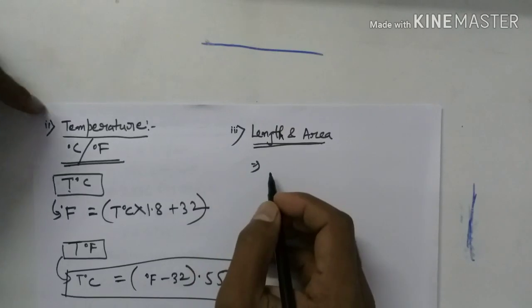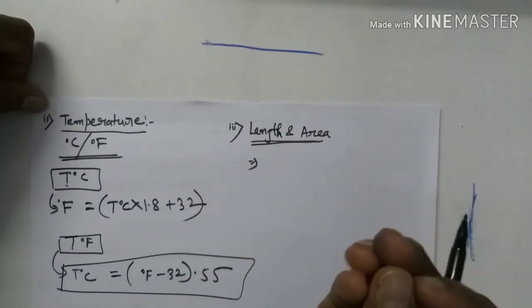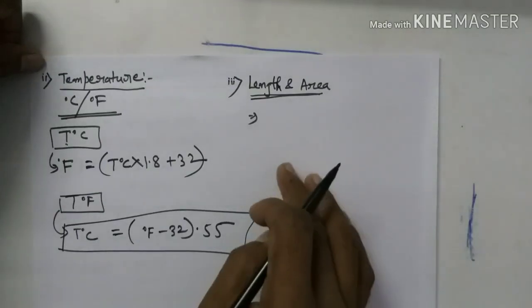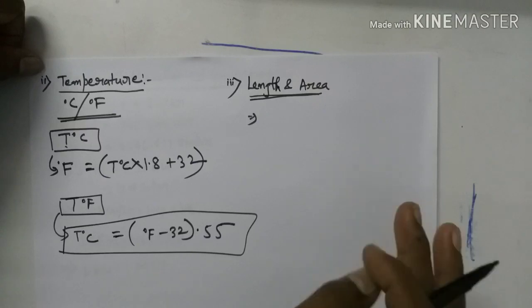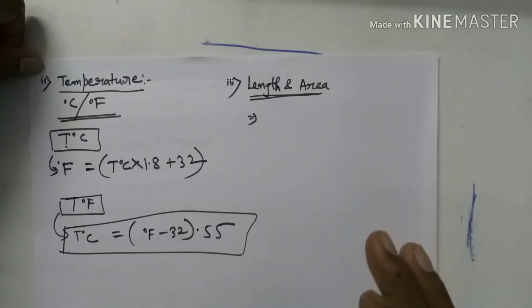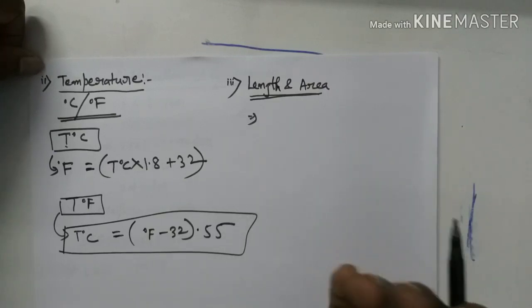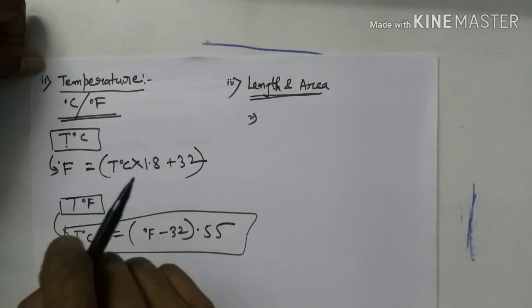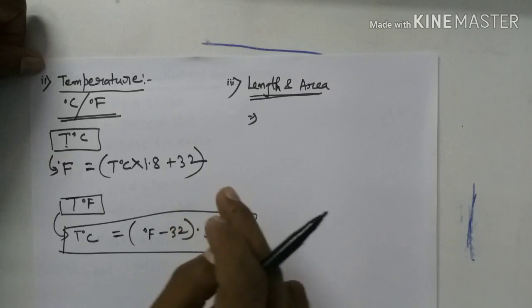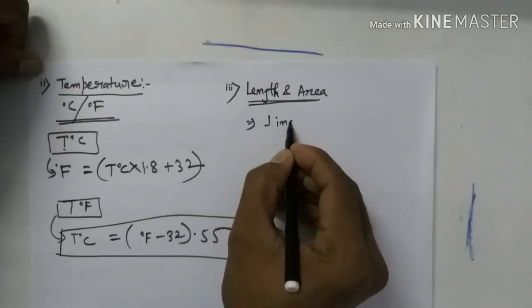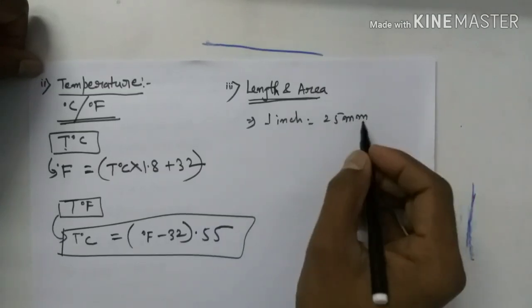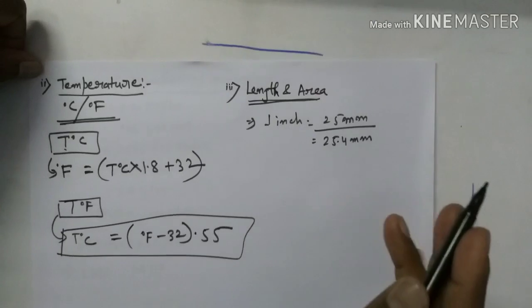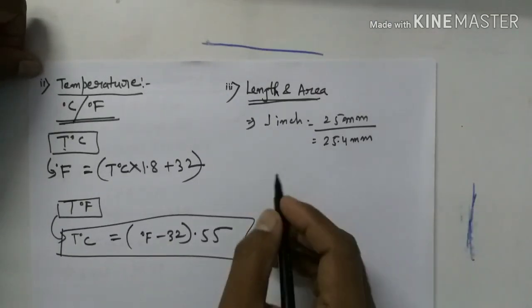Now let me move to length and area conversion. I'm telling you the points generally required in today's industry and asked in mechanical engineering interview questions from an industrial application point of view. For length: one inch is equal to 25.4 millimeters — simply remember it as 25 millimeters, the 0.4 is ignorable.